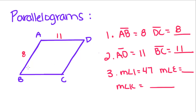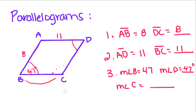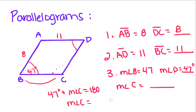The measure of angle B equals 47 degrees, so this right here equals 47. The measure of angle D has to equal what? Well, since opposite angles are congruent, angle D has to equal 47 degrees. The measure of angle C — consecutive angles are supplementary — so we set 47 plus the measure of angle C equal to 180, giving us angle C equals 133 degrees.